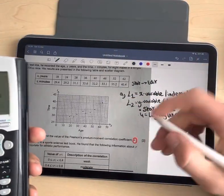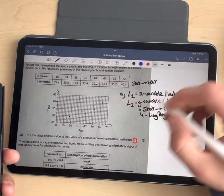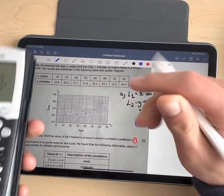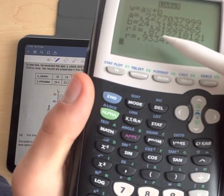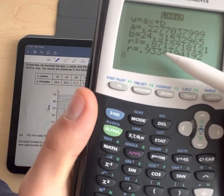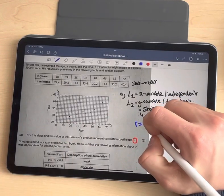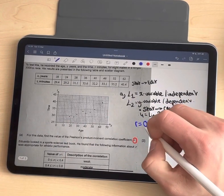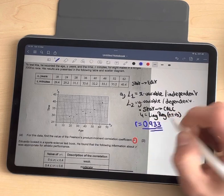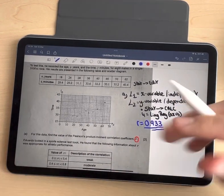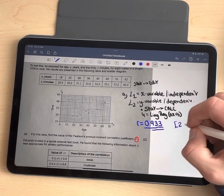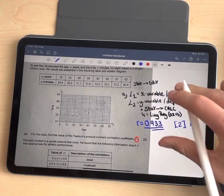To know the r value, which is what we're looking for, pretty simple, we just take r equals the number that's given to us. In this case, 0.933. So 0.933 is the Pearson's product moment correlation coefficient. This already gets us two marks.